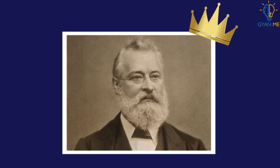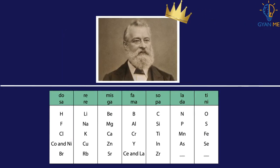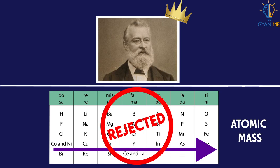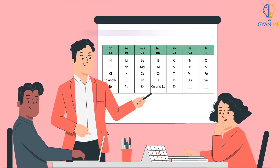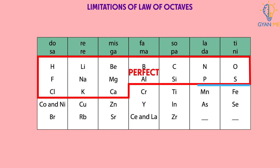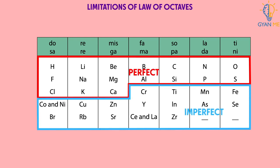He was the first scientist to arrange the elements in ascending order of their atomic mass. But later on, this rule was rejected. When he presented this table in front of the scientific community, many people mocked him. In his table, things fell in place only till calcium; after that, they became imperfect. Only about one-third of the table was correct — the first limitation being that Newlands' classification was valid only up to calcium, not for elements beyond that.